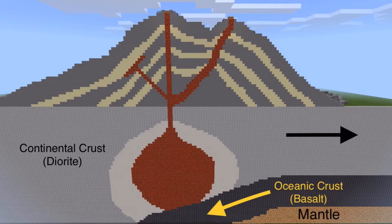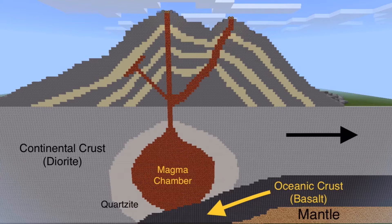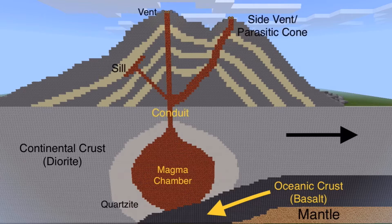Basalt is more dense than diorite, and so when the two plates get pushed together, the basalt gets forced downwards into the mantle where it starts to melt. In geology, any molten rock underground is called magma. Only when it erupts out of the ground is it called lava. So as the basalt melts, it forms this magma chamber, and it also starts melting some of the surrounding diorite, so the magma has kind of a mixed composition. Around the magma chamber, the rock gets heated up and changes its appearance. I've used quartz to show this in Minecraft, because you would expect to see a lot of quartz in this area.